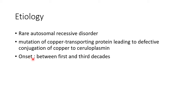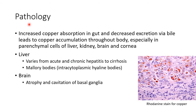The onset of the disease is between the first and third decades. Now let us see about the pathology of Wilson's disease. There is increased copper absorption in the gut and decreased excretion via bile, leading to copper accumulation throughout the body, especially in parenchymal cells of the liver.